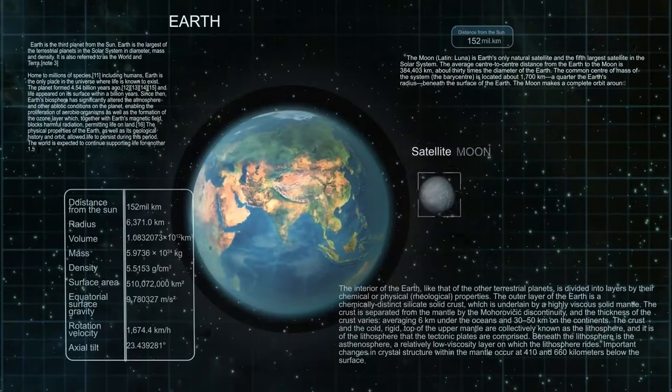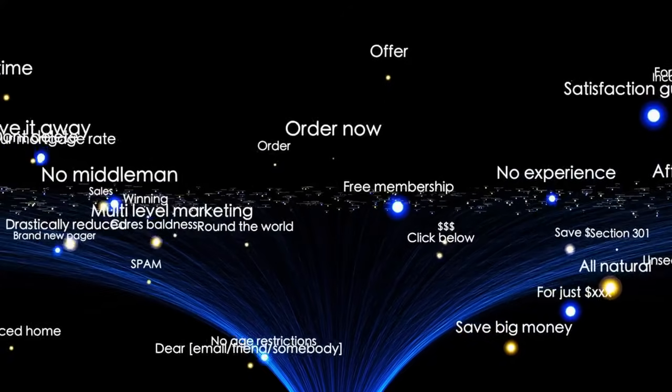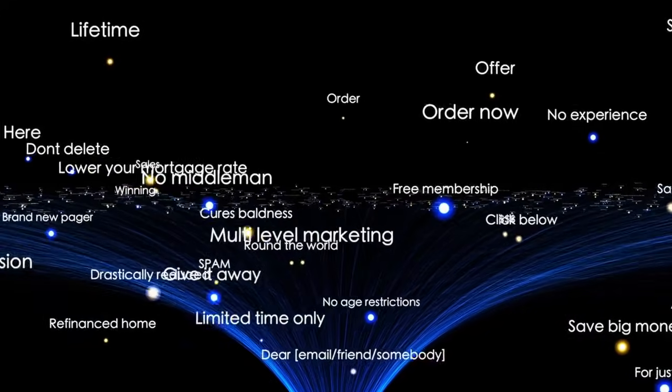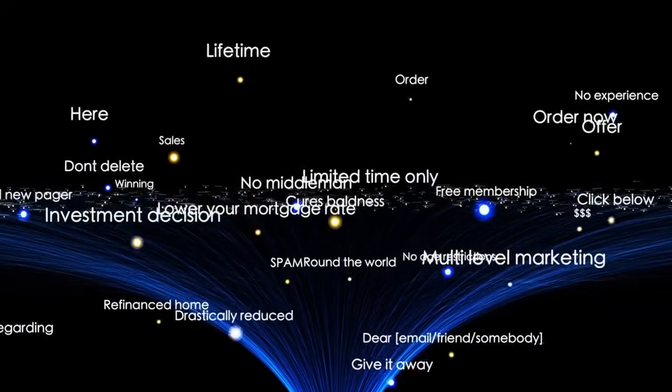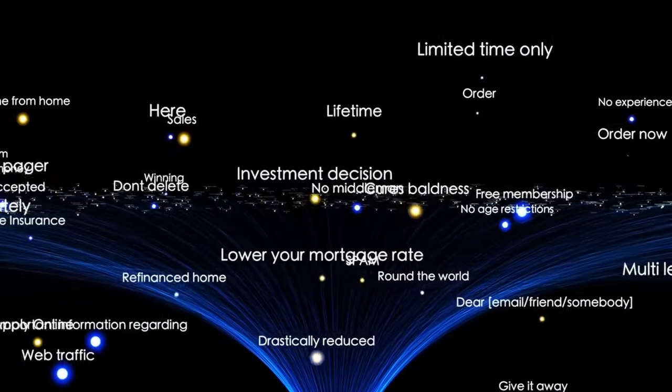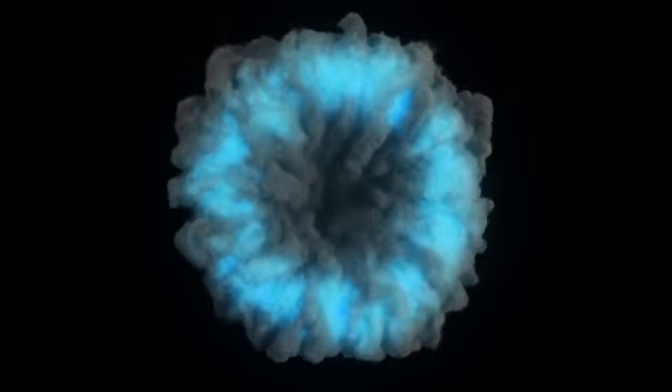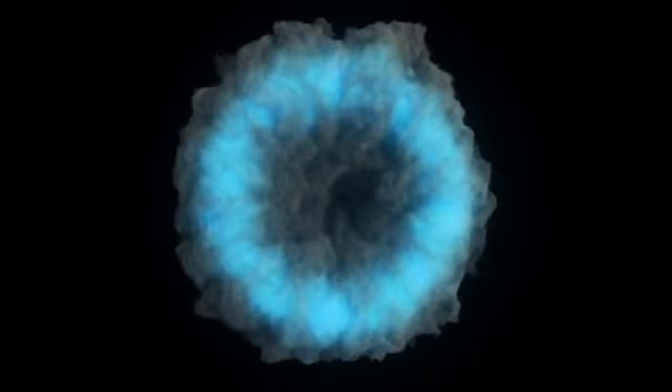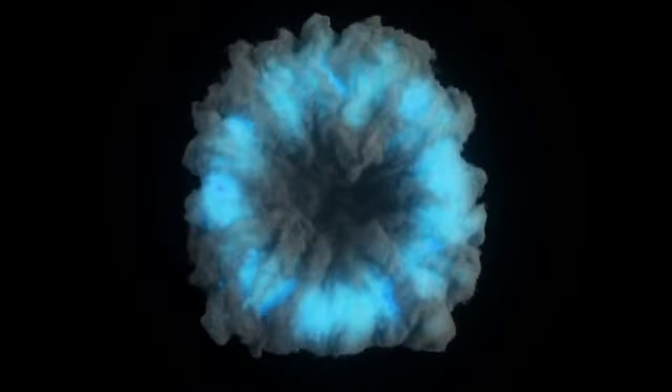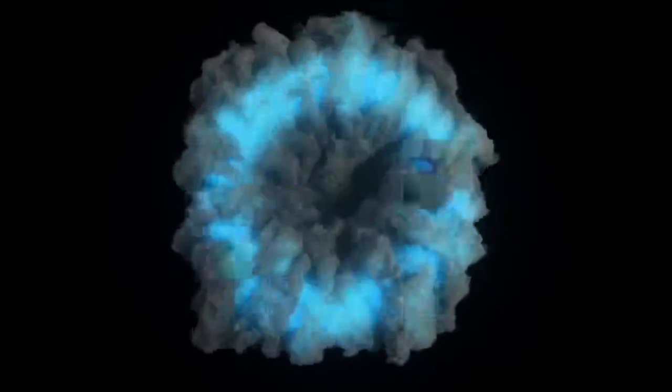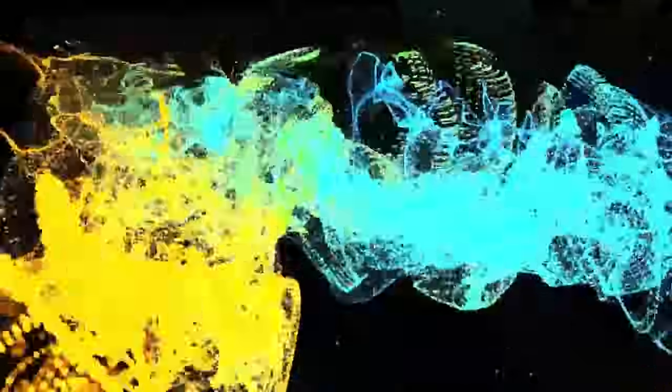Every 7.2 hours, 3i Atlas brightened sharply, predictably like a lighthouse. The brightness curve wasn't chaotic like tumbling debris. It was locked clockwork. Some suggested a sheet-like surface catching sunlight. Others proposed a hollow rotating frame. But one thing was clear. This wasn't a rock. It was something moving with precision.